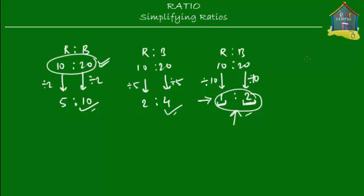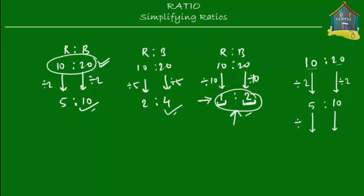To simplify ratios, start with the two terms — 10 and 20 — and find a common factor. One common factor is 2, so divide each term by 2 to get 5 to 10. Then check if 5 to 10 can be divided further by a common factor. It can — divide by 5 — and you get 1 to 2. Since 5 to 10 can be simplified further, it is not the simplest form. But 1 to 2 is guaranteed to be the simplest form because one of the terms is 1, so there is no common factor that can divide both terms further.